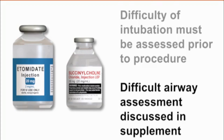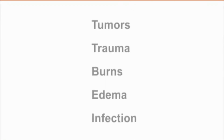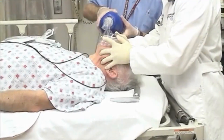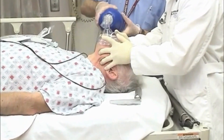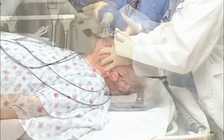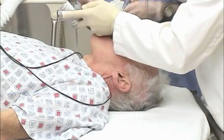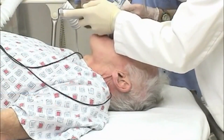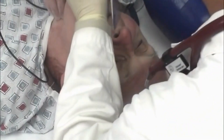The presence of tumors, trauma, burns, edema, or infection of the pharyngeal or laryngeal soft tissues may distort airway anatomy, leading to difficult orotracheal intubation. When faced with a potentially difficult airway, consulting with an experienced intubator and preparing to use an alternative intubation technique are recommended before proceeding.